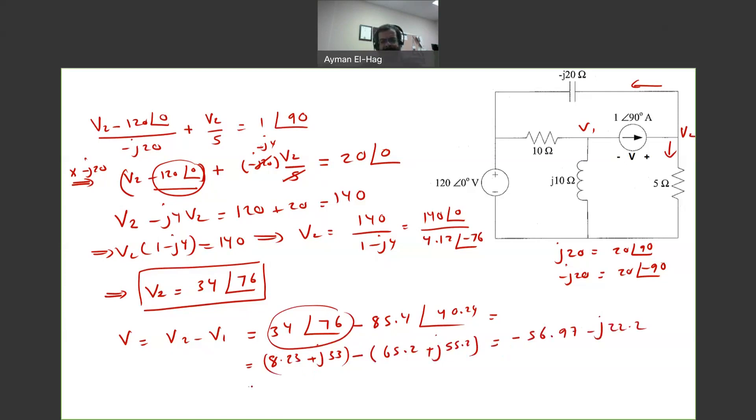If we subtract these two numbers, you will get minus 56.97 minus J22.2. You can keep it like this. Personally, I prefer to have this as a polar format, which is equal to 61.14 angle of minus 158.7. And this is the voltage that you are looking for, the voltage across the current source with the given polarity.